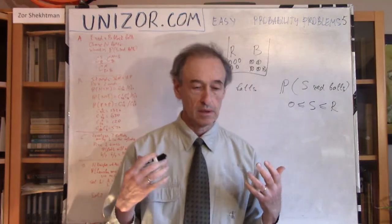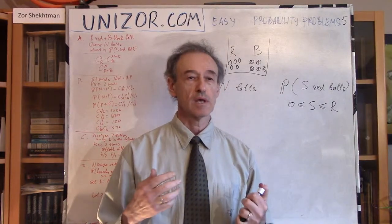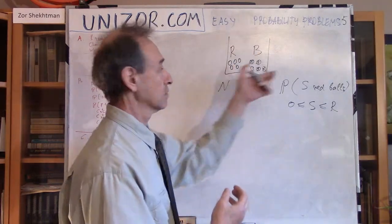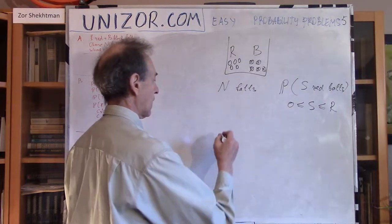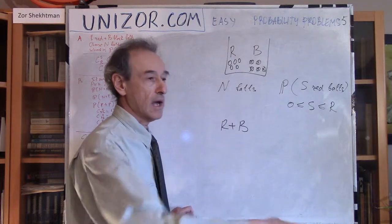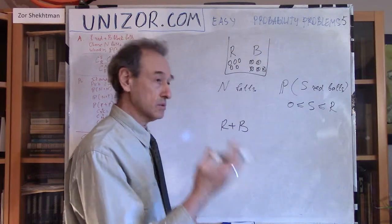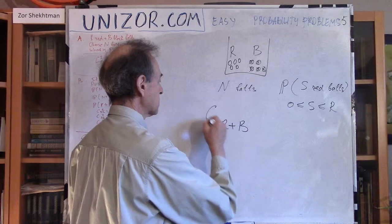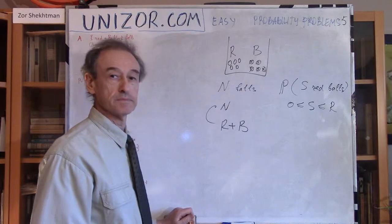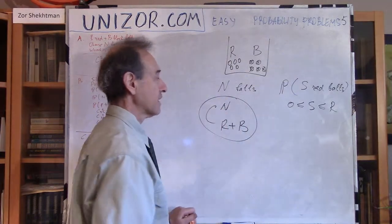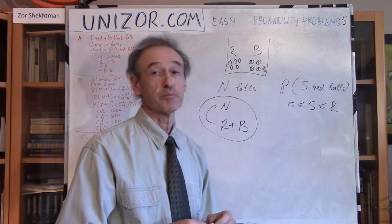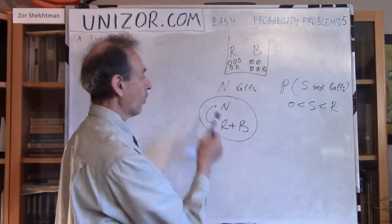What's the sample space? The sample space is all the different groups of N balls which I can pick from this box. In the box I have R plus B balls, and out of these R plus B balls, I am randomly taking N balls. How many different groups of N exist? Obviously, the number of combinations from R plus B by N. So this is the total number of elementary events in my sample space, and they're all equally probable, which means the probability of each one is 1 over this number.